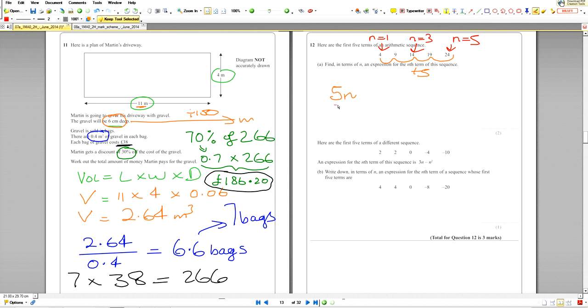...into here, 5 times 1 equals 5. What should I really get? 4. How do I get 4? Minus 1 - that's my adjustment, because 5 minus 1 will give us the 4 that we actually need. The question says write an expression, and an expression has no equal sign in it.